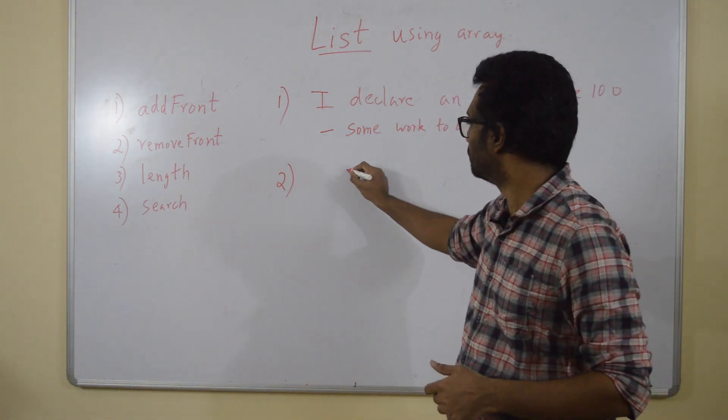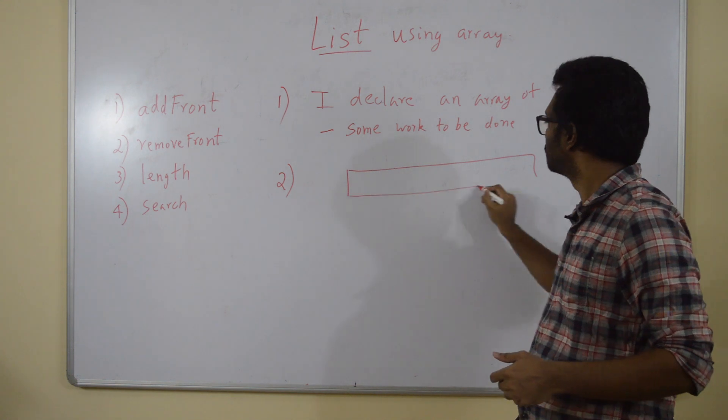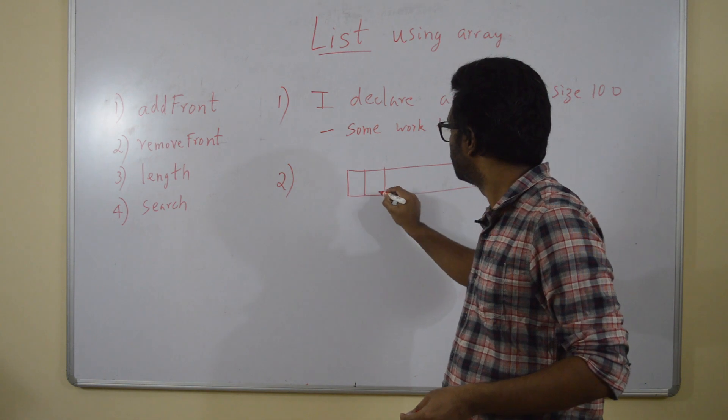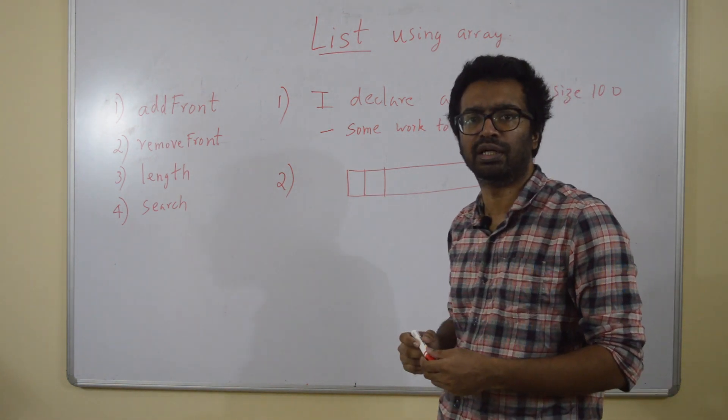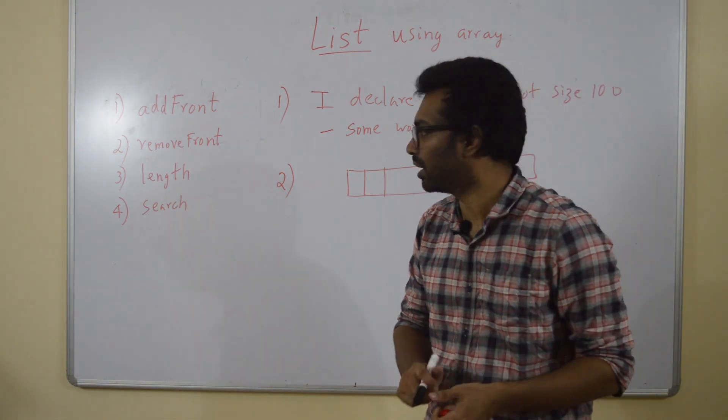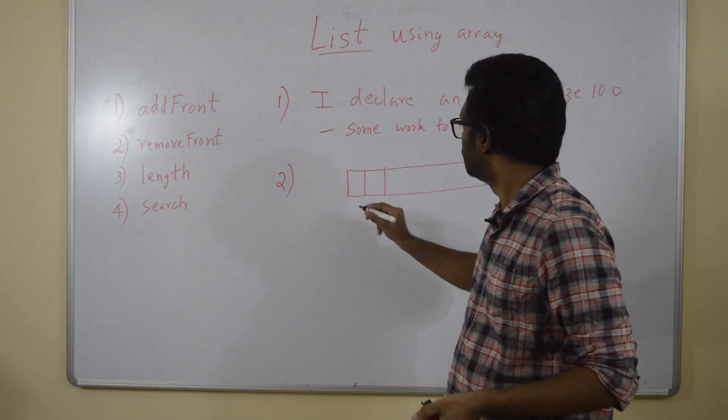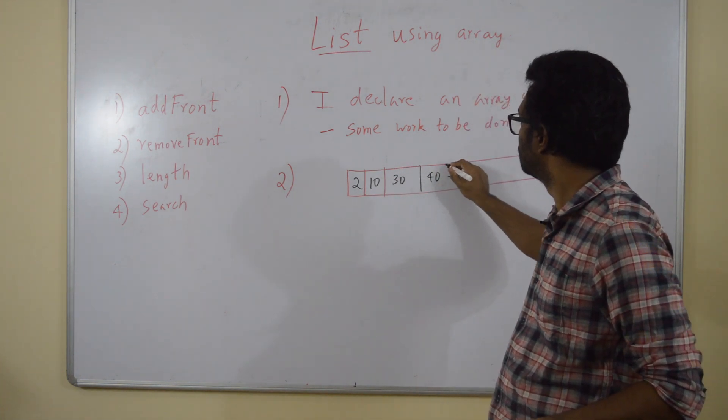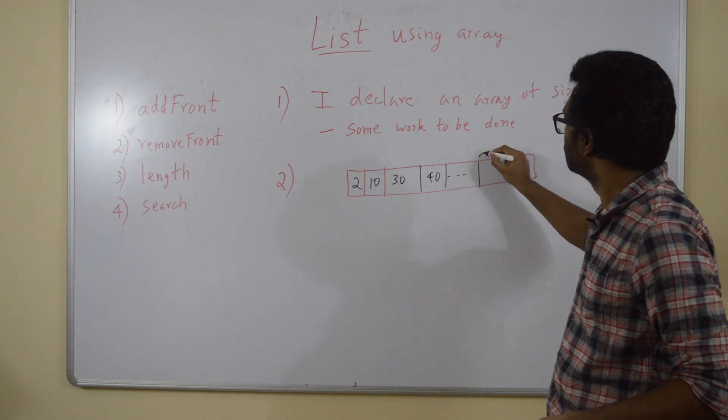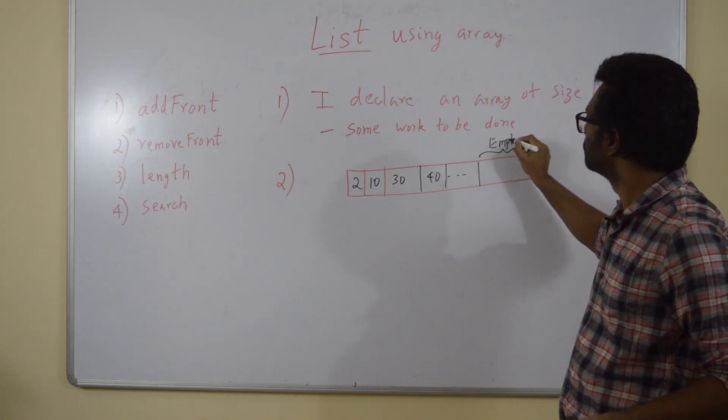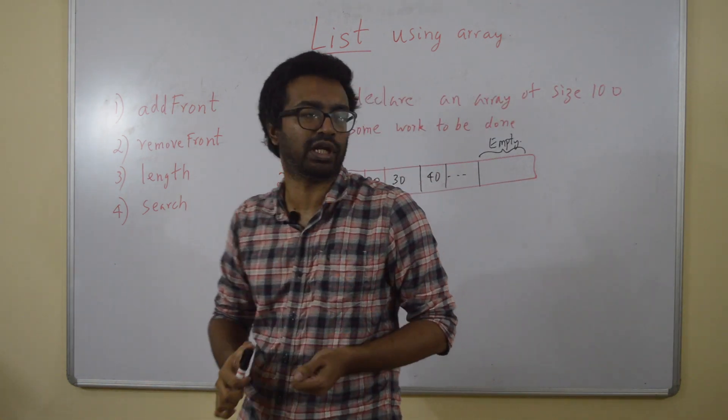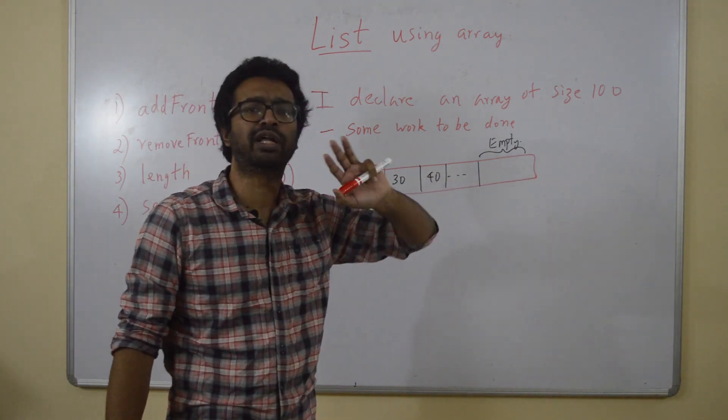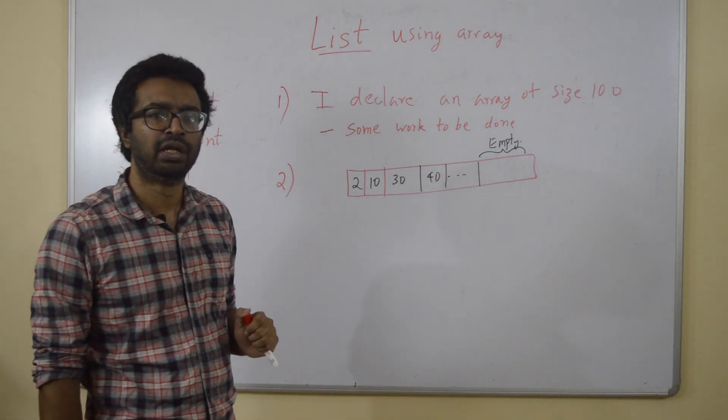let's say I have an array like this. It's an array of size 100 right now. And initially, let's say some of these numbers are filled. The first initial few array locations are filled - 2, 10, 30, 40 and a few more are filled. But the last few things are empty. This is how let's say the current array situation is.